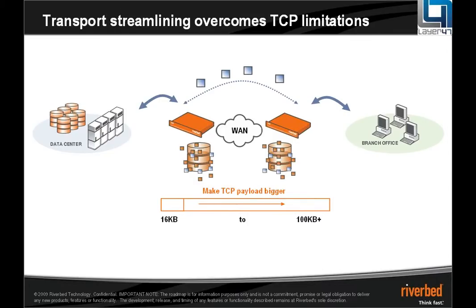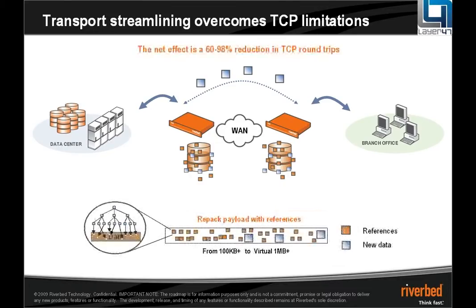What we want to do is make that far more efficient. Because we are repacking every payload sent across the network with 16-byte references — each potentially referring to megabytes of data — your effective window sizes are virtually increased to several megabytes per window rather than 16 or 32 kilobytes. The end result is we need far fewer round trips across the network where latency is causing pain. Any application that uses TCP will see a benefit from the referencing technology and the performance improvements it gives to TCP itself.